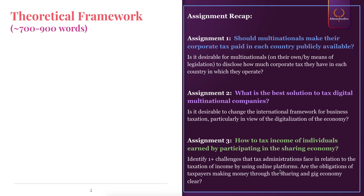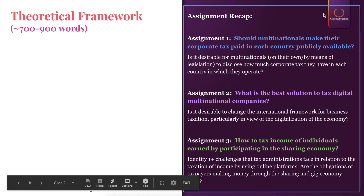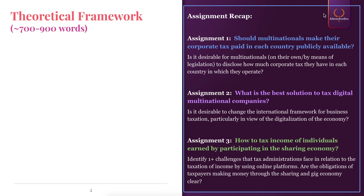I'm going to give you guys an assignment recap to make sure we're all on the same page. For your taxation assignment, you had to choose between assignment one, two, or three. The first one is talking about the public availability of corporate tax payments. The second is about what is the best solution to tax digital multinational companies, and the third assignment is to analyze how to tax individuals earning money based on participation in the sharing economy. You had to pick one and then make a more specific research question based on the main assignment topic.